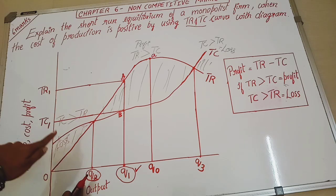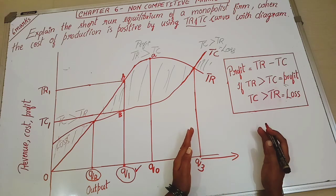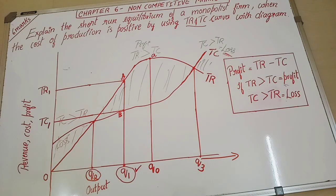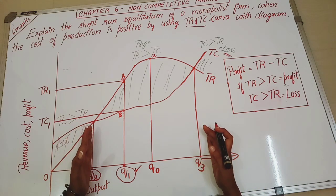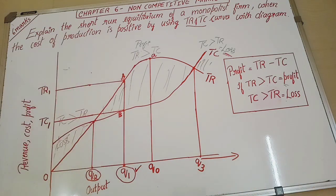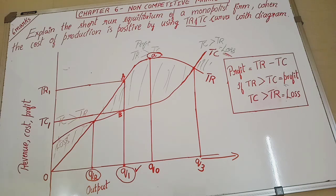So we understood about Q1 level of output. If my output is below Q2 level, the firm is incurring a loss. Then if the firm is producing after Q3, again the firm will be making loss. So if monopoly firm has to make profit, profit is happening between Q2 to Q3. If the firm wants to make maximum amount of profit, the firm has to produce Q0 level of output.